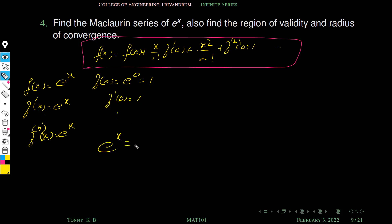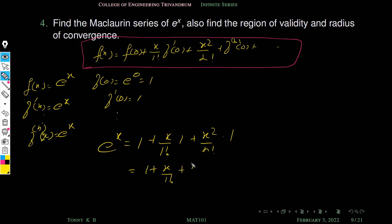So what is the Maclaurin series of e^x? f of 0 is 1, plus x over 1 factorial times f dash of 0, which is also 1, plus x squared over 2 factorial times 1, and so on. The series representation is equal to 1 plus x over 1 factorial plus x squared over 2 factorial plus etc. And what is the region of validity?